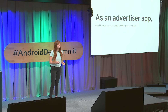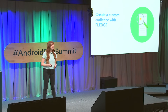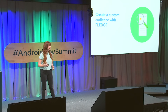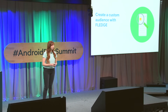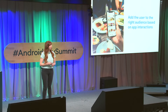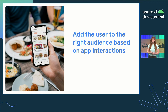Advertiser apps want to select the best possible ad to be shown in other apps on the same device. To do this, they can use the Fledge API to add a device to a custom audience based on the actions that a user takes. The custom audience carries information for candidate ads and logic to determine which ad to display. Let's say the user accesses the children's menu in a restaurant app. This action would be a good trigger to join the device to a custom audience for families of children. In addition, the restaurant app lets the ad network that manages its ads know about this custom audience.